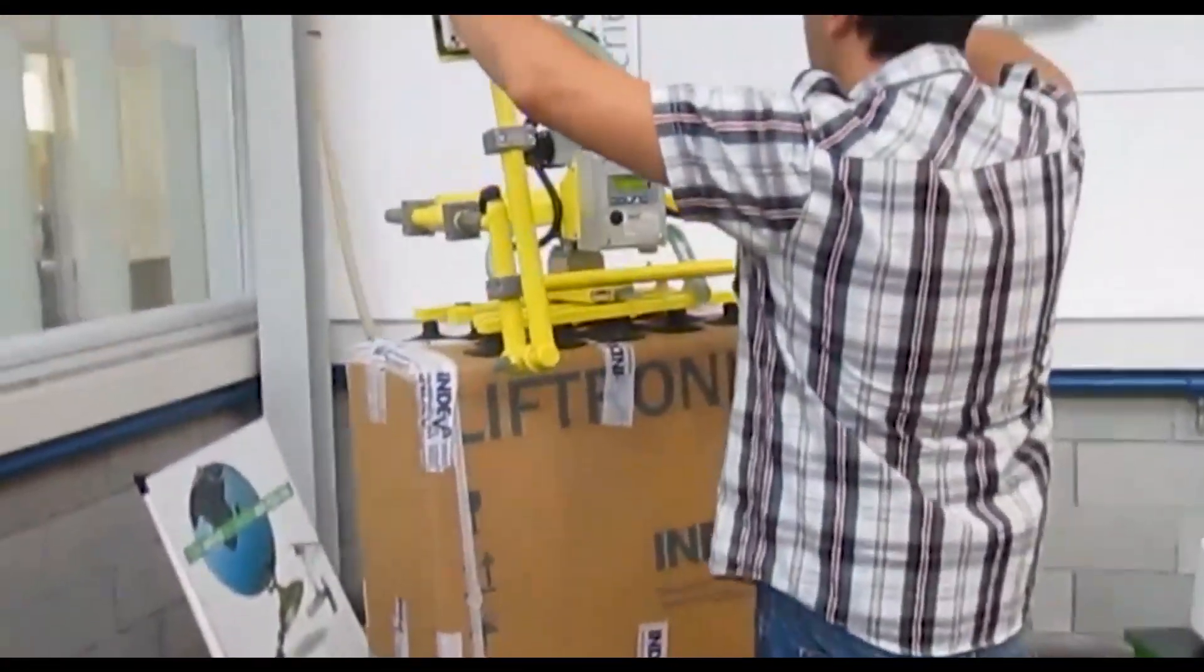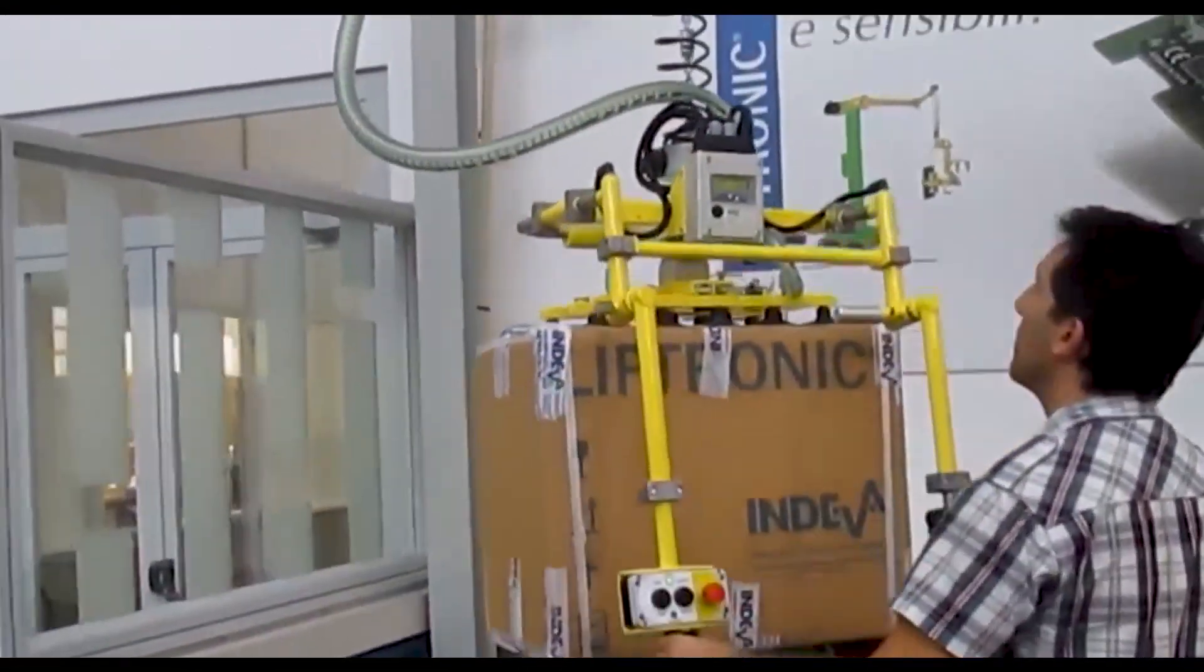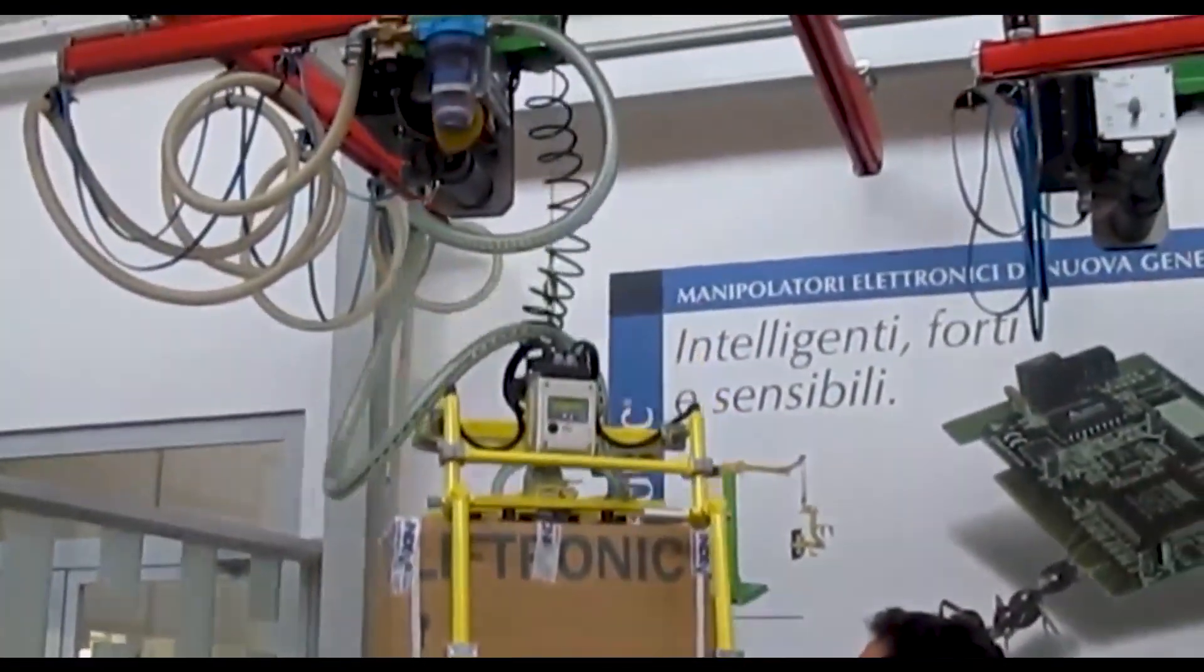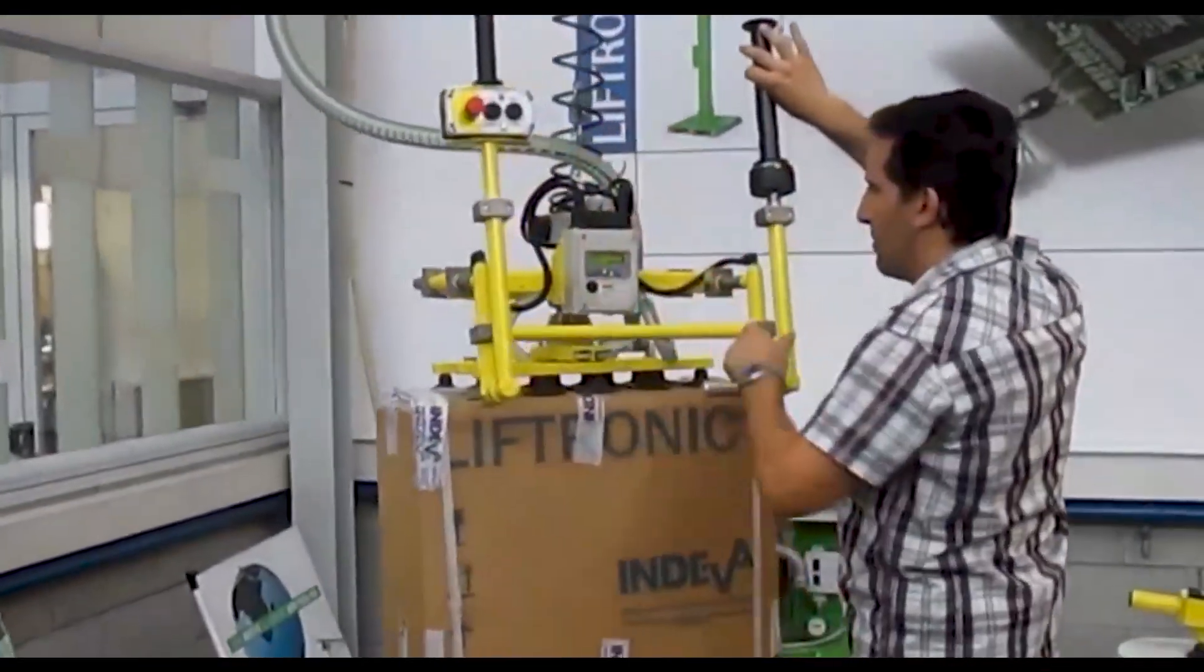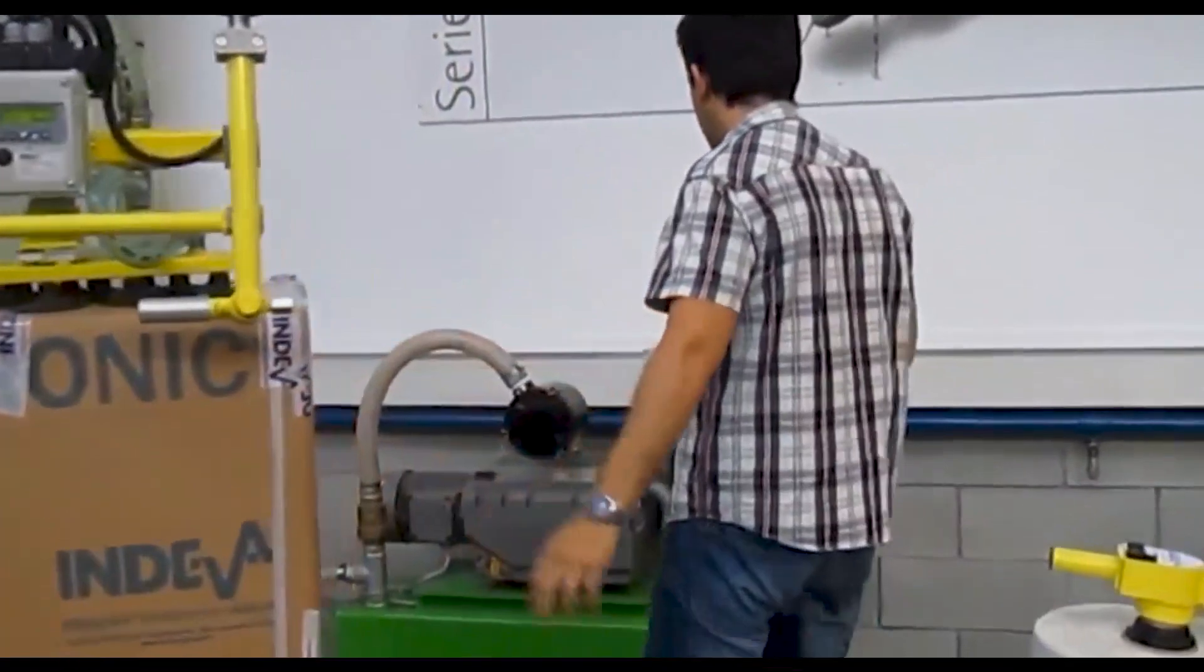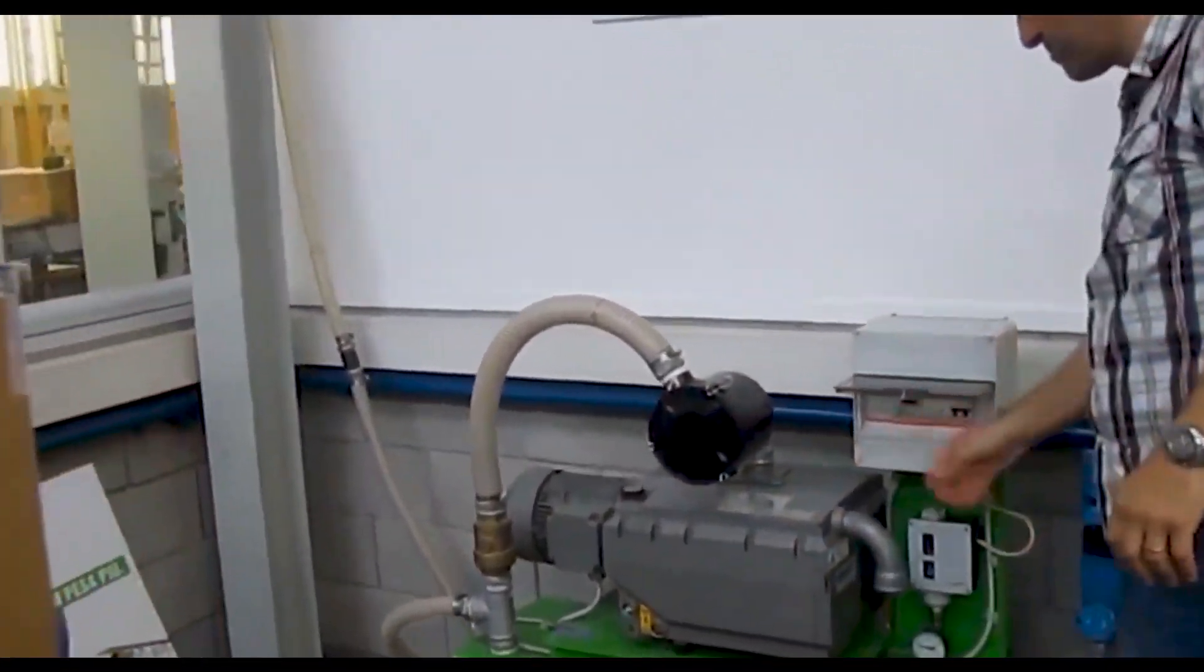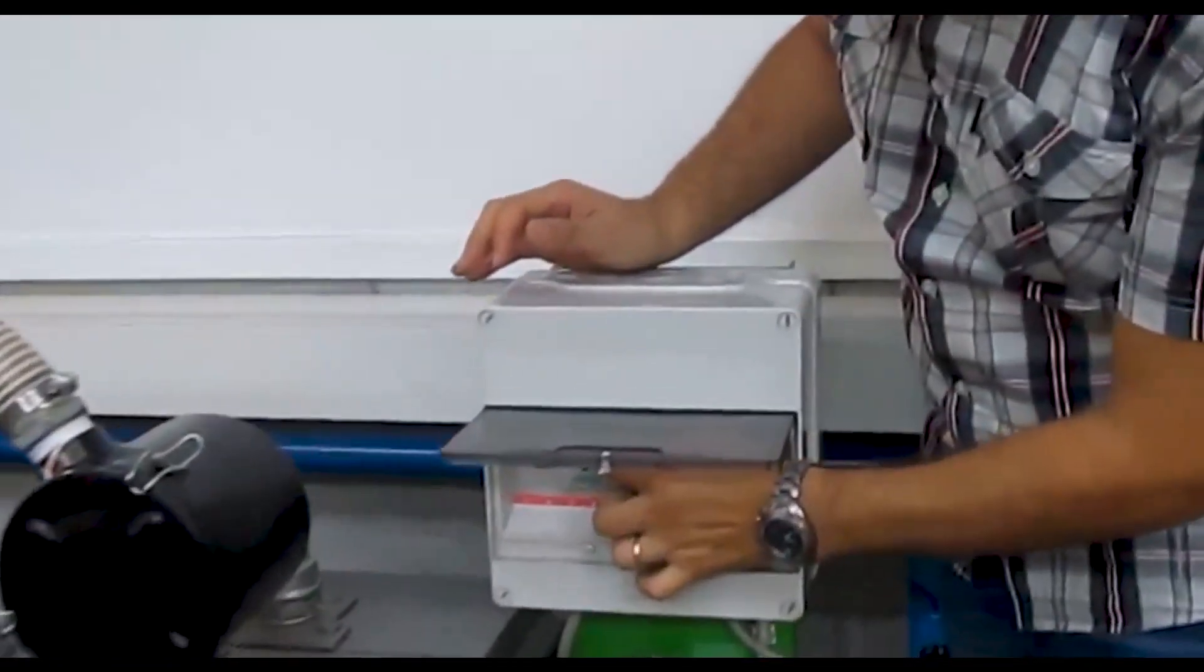The manipulator automatically balances the weight of the load every hundredth of a second. In case of accidental loss of the load, the Liftronic manipulator remains still, unlike the pneumatic manipulator which jerks dangerously upwards implying serious hazards for the operator.